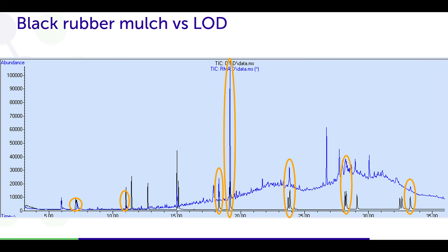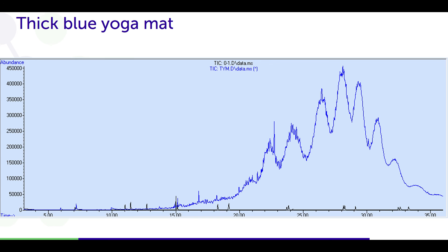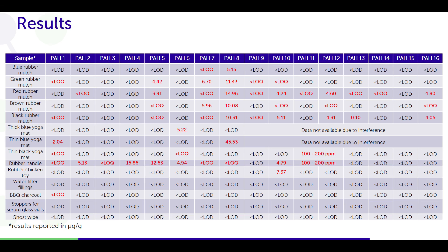Children get this rubber mulch on their hands, then put their fingers in their mouths and eat food — so this is a serious issue. The blue yoga mat had a significant number of interferences but also has high levels of PAHs. So among these consumer products, there were a number of things with potential issues.